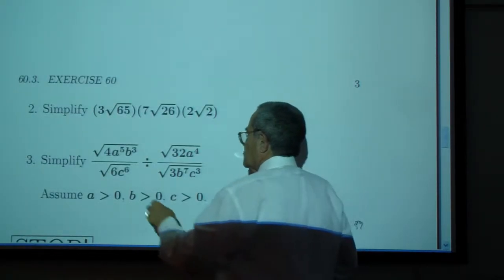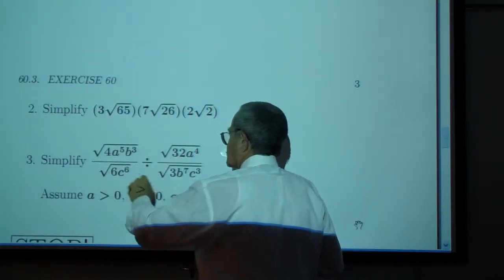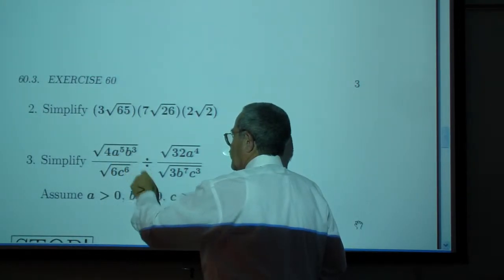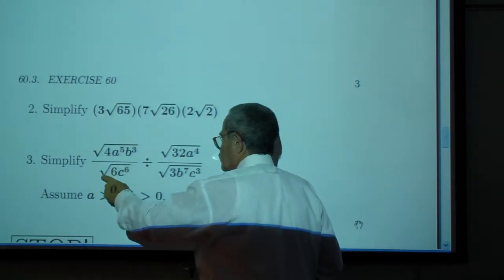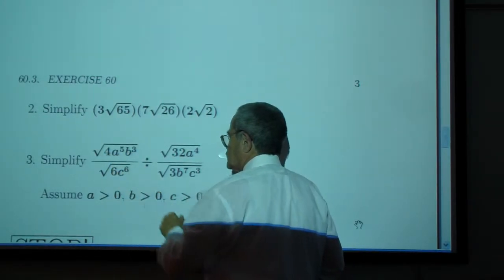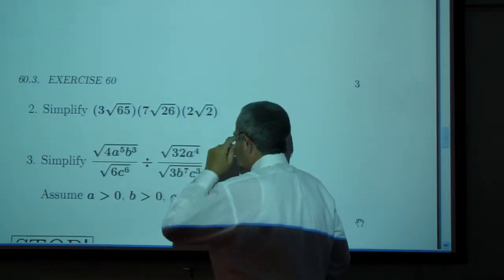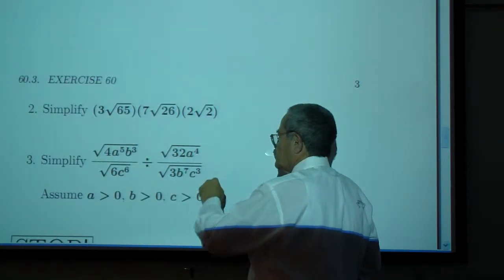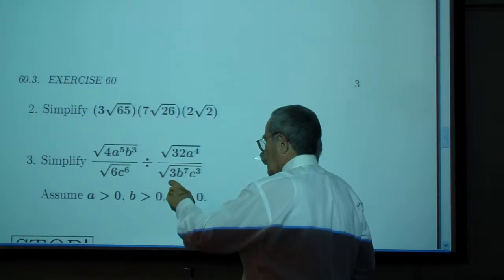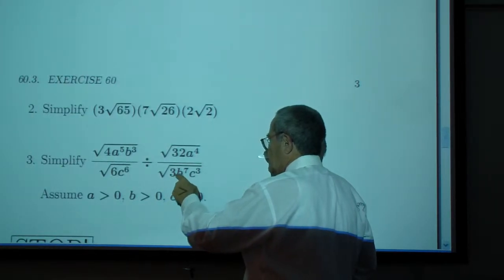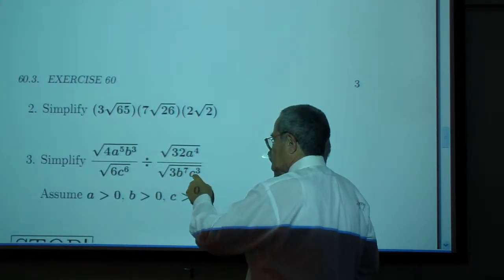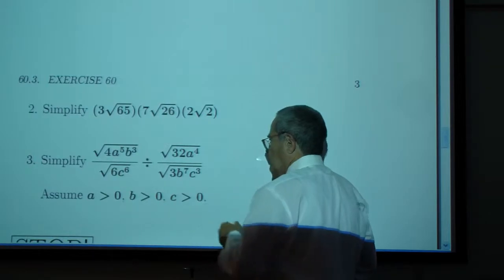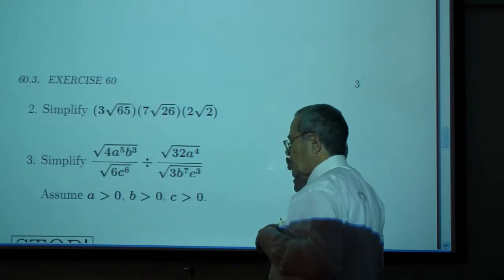3. Square root of 4a to the 5th times b cubed, over square root of 6c to the 6th, divided by square root of 32a to the 4th over square root of 3 times b to the 7th times c cubed. Assume that all the variables are positive.